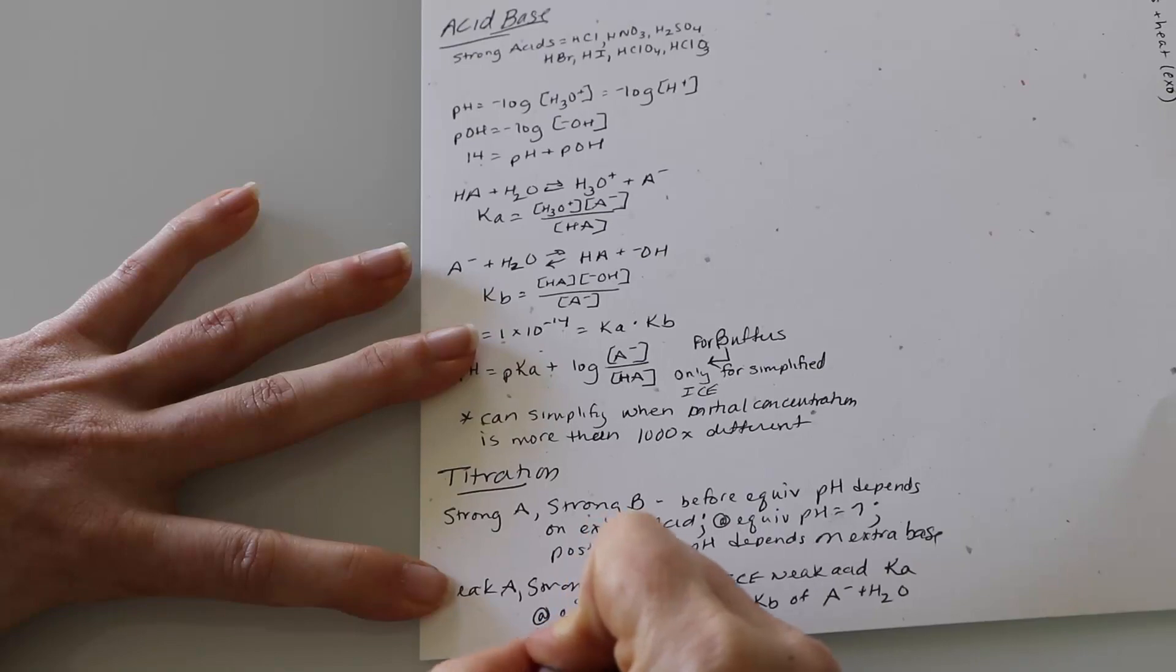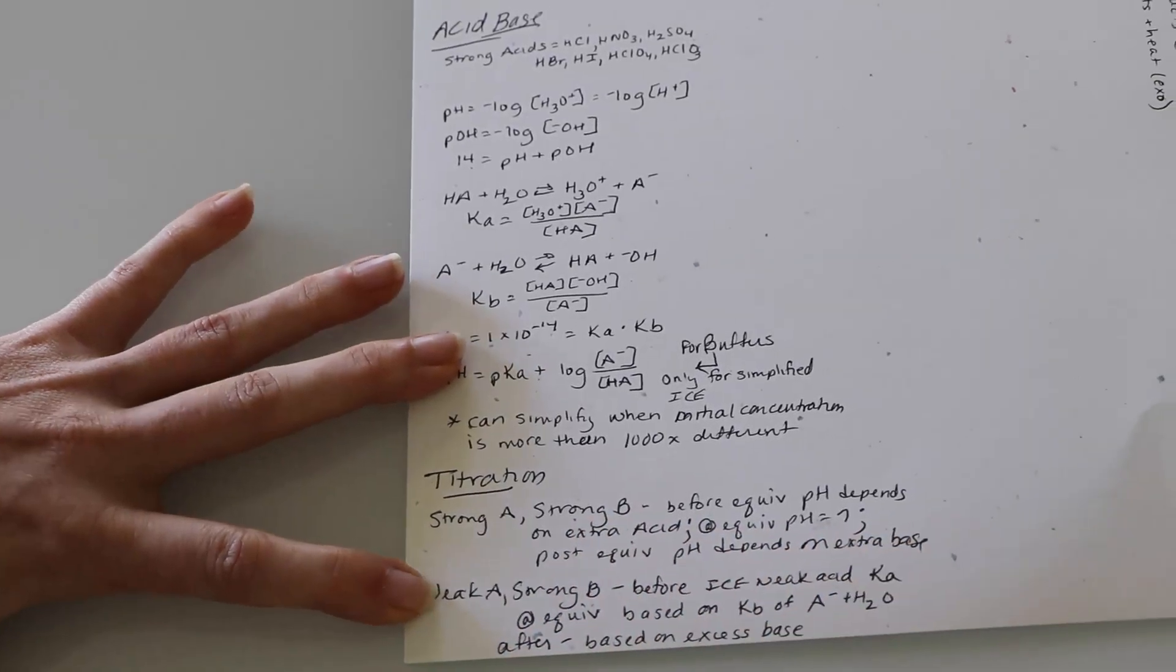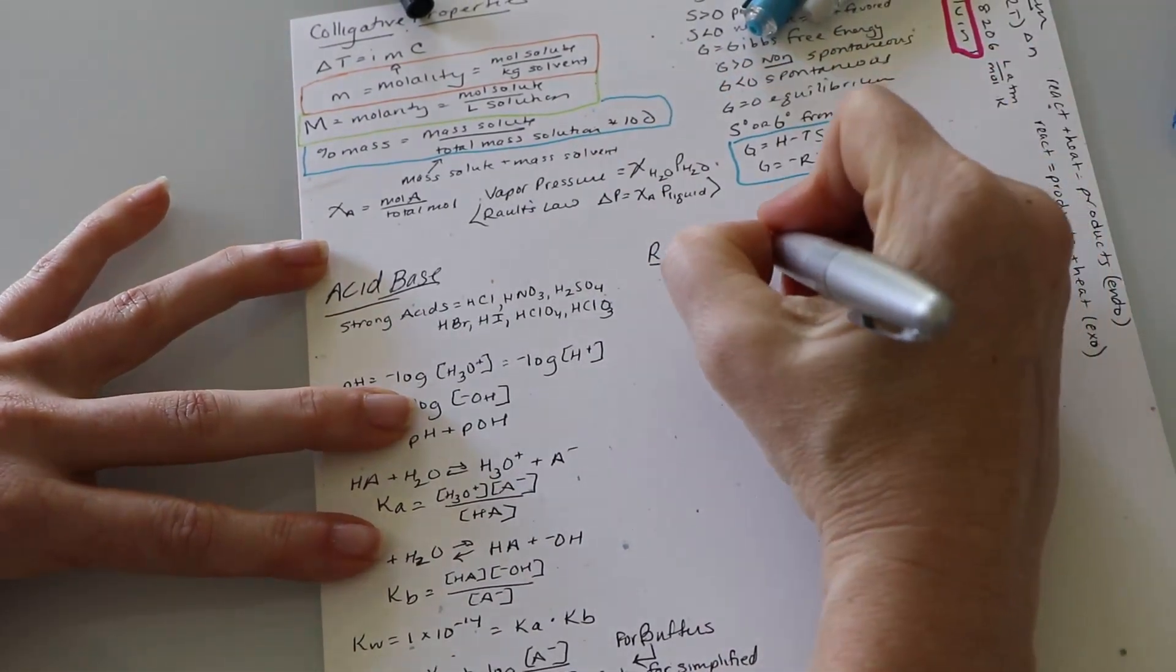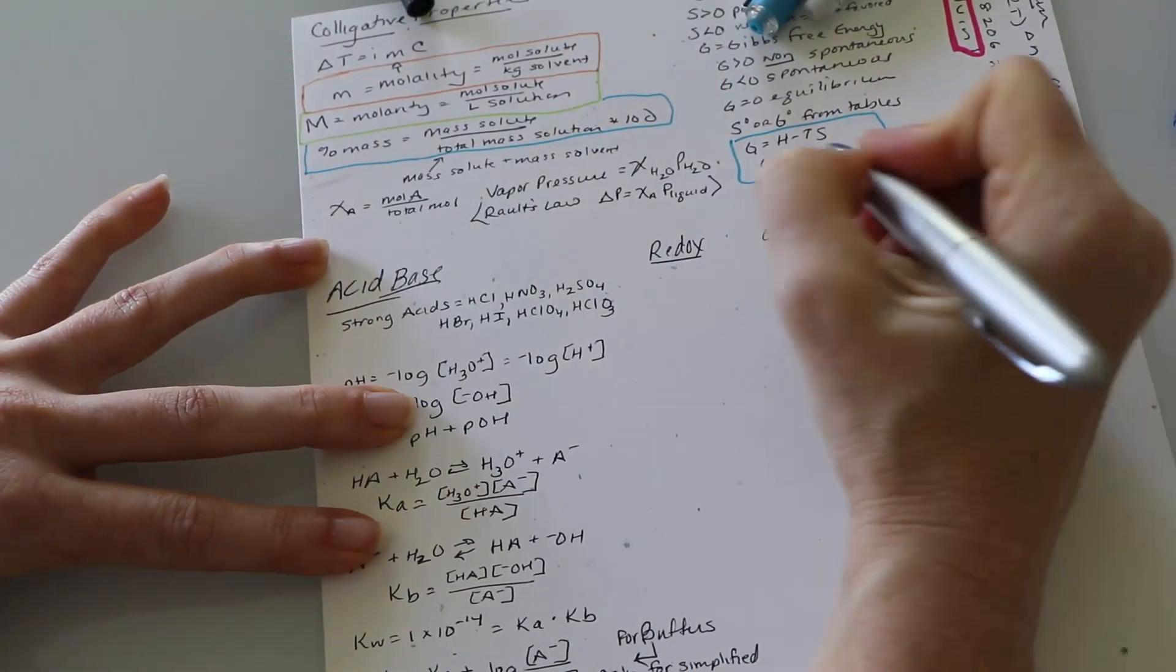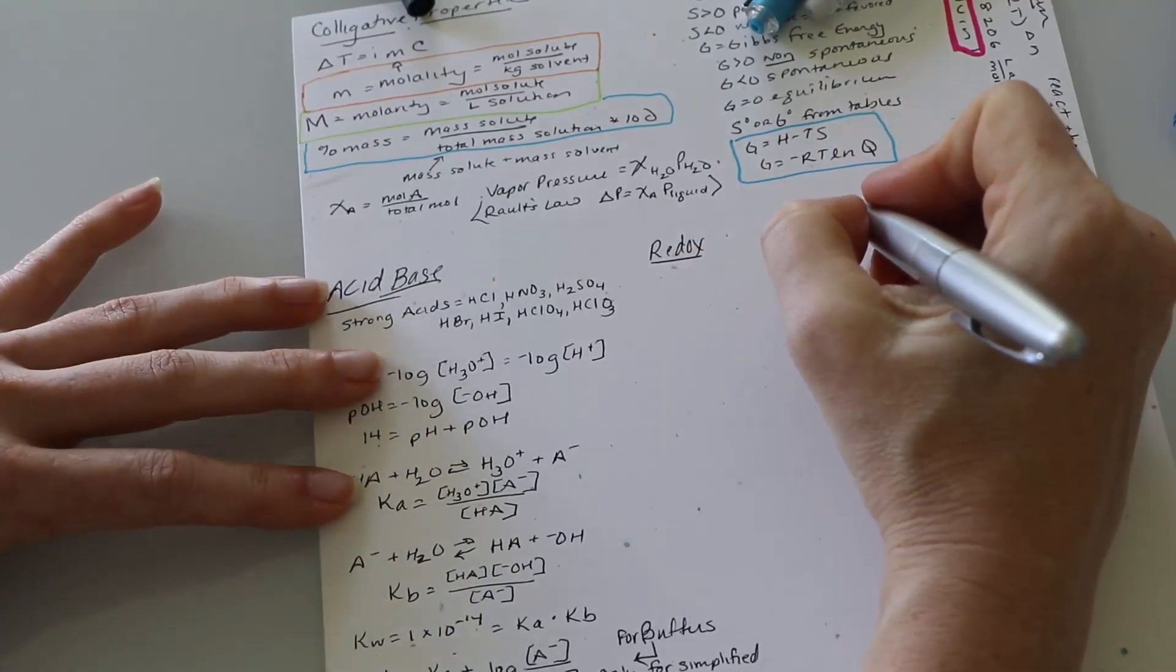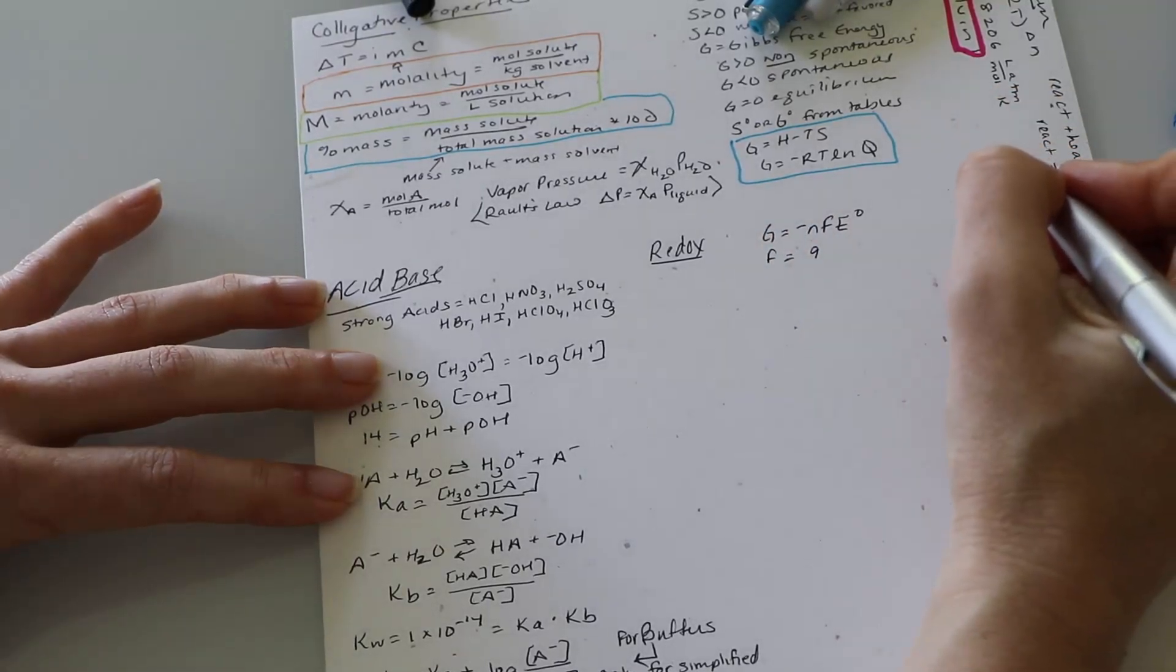But for a weak acid, strong base, before the equivalence point, you're dependent on the weak acid ice table with KA. At equivalence point, you're going to be dependent on that KB expression that I wrote where my index finger on my left hand is, where the acetate, I'm using acetate because acetic acid is often used, where your conjugate base plus water equilibrium.